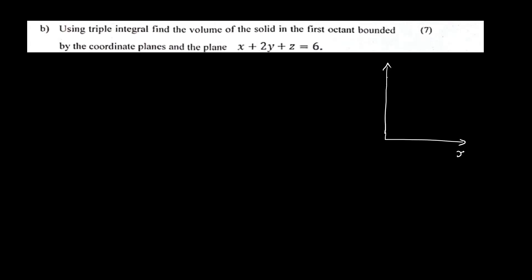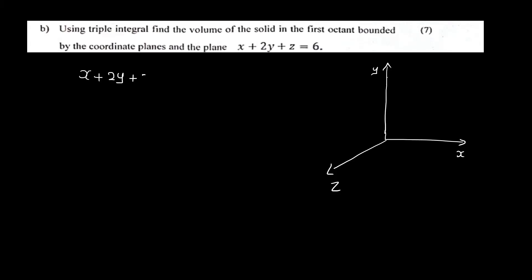The first octant is your first portion — x, y, z. The plane x plus 2y plus z equals 6 is what we work with. You can fill it in the first octant, starting from the point (0, 0, 0).